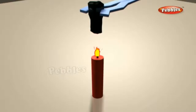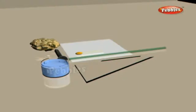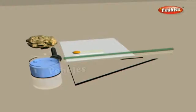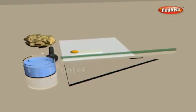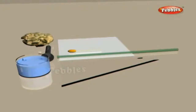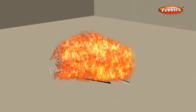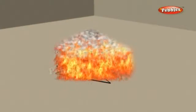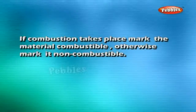Otherwise, mark it non-combustible. When brought into contact with fire, heat and light are produced. For example, a heated magnesium ribbon, when introduced into a jar of oxygen: 2Mg + O₂ → 2MgO + heat + light. Combustible materials burn when they come into contact with fire. Try to do the same with a spoon or glass, which are non-combustible. Substances which burn when brought into contact with fire are called combustible; those that do not are called non-combustible.